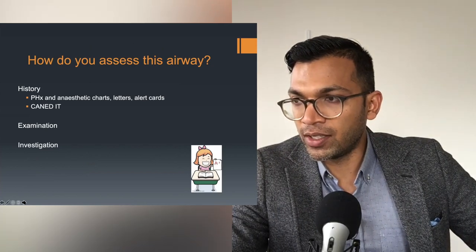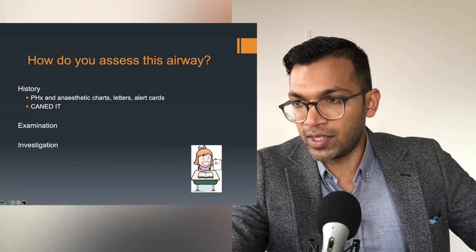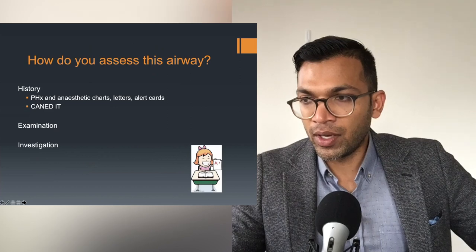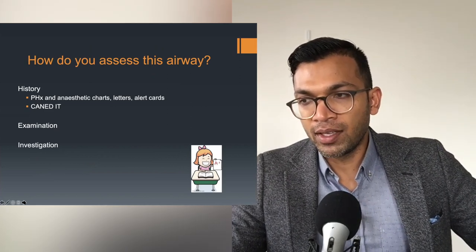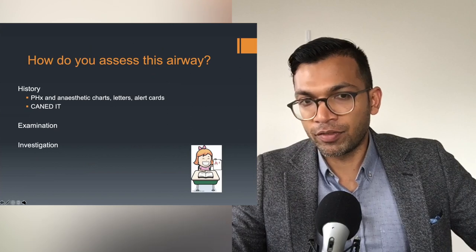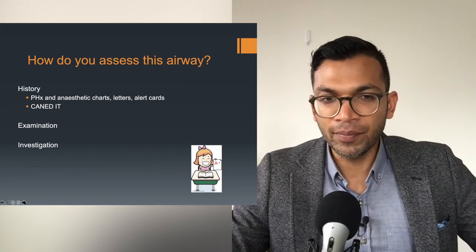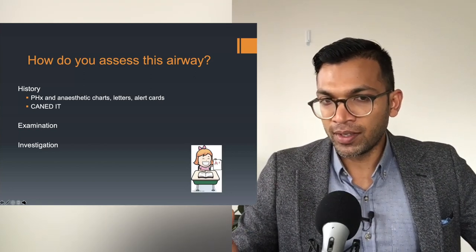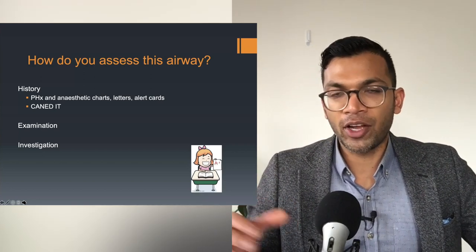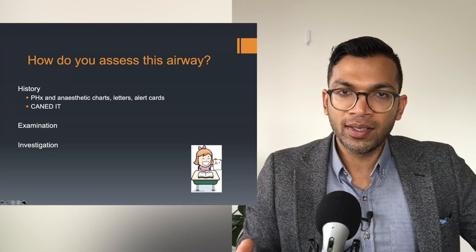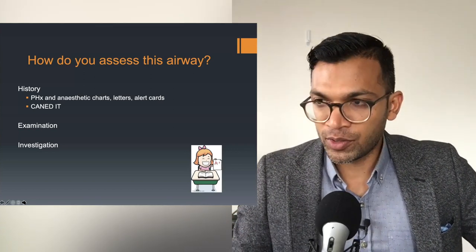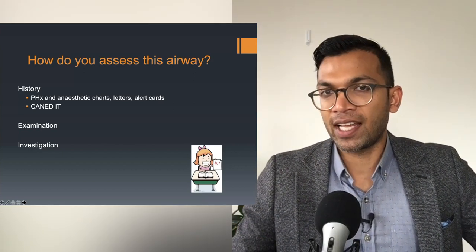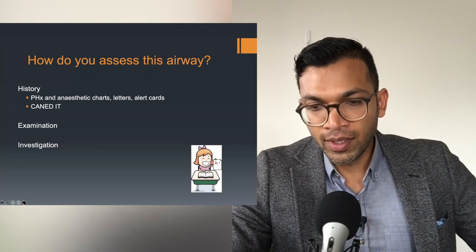If you're ever asked this, it shows perspective to give a structured approach. Past history and anaesthetic charts, letters, and cards from previous airway management are the best predictors of a difficult airway. CANDI is a mnemonic for causes: Congenital, Autoimmune, Neoplastic, Endocrine, Drug, Infection, and Trauma. It applies well here — though often the causes are so obvious when the patient comes in that you don't need to think too hard, but it gives a complete answer for your consultant.